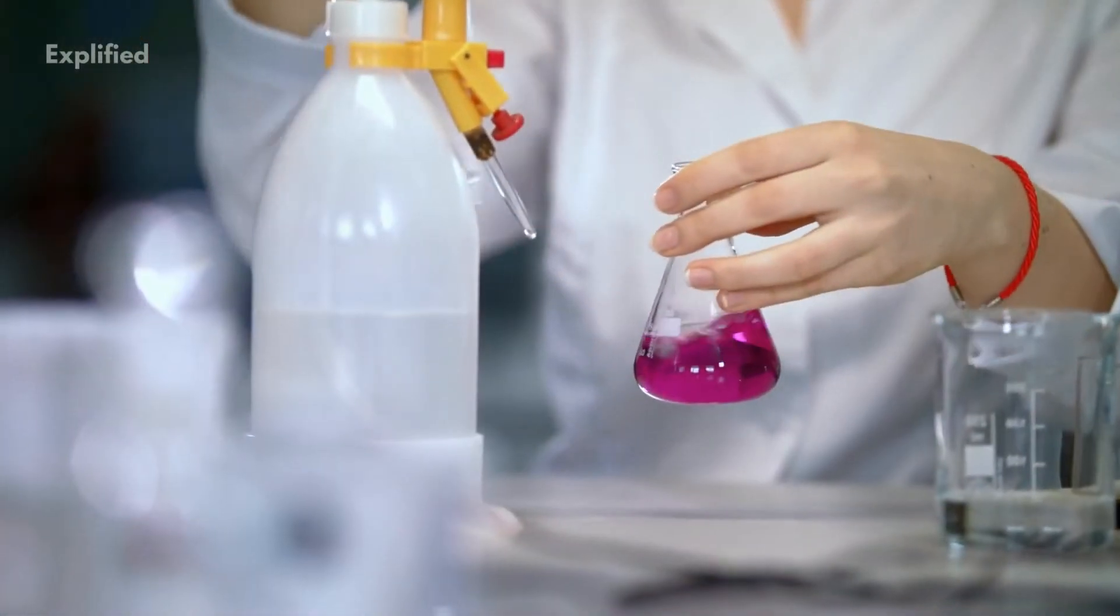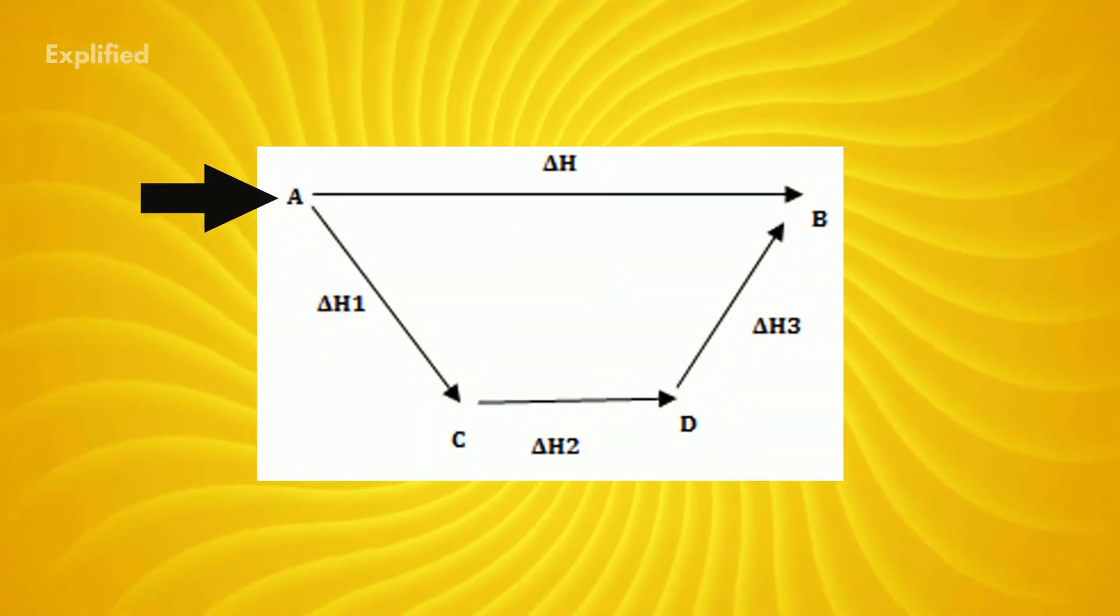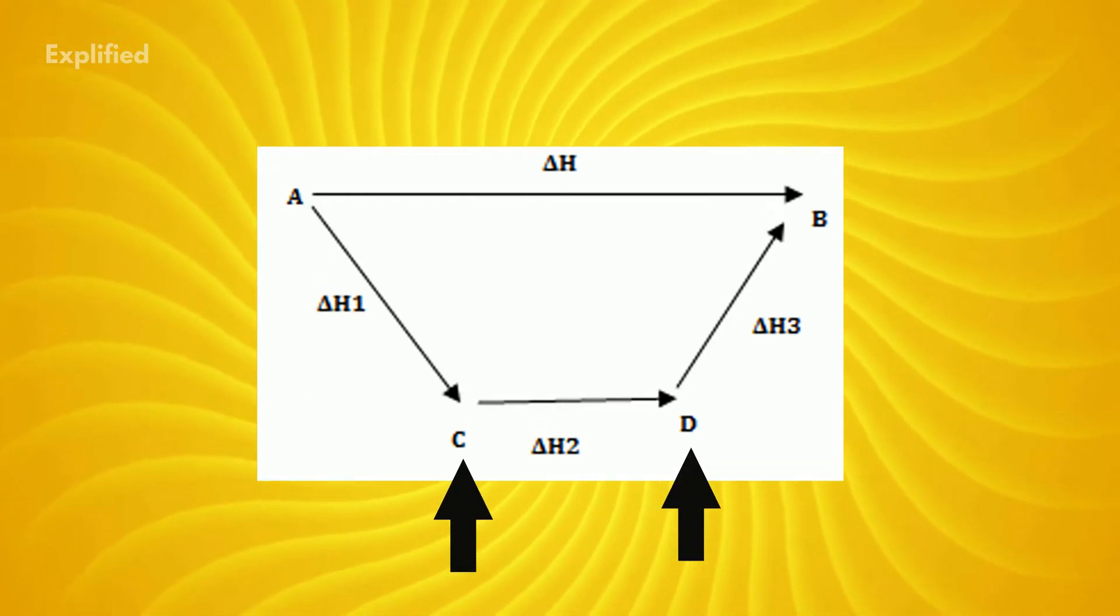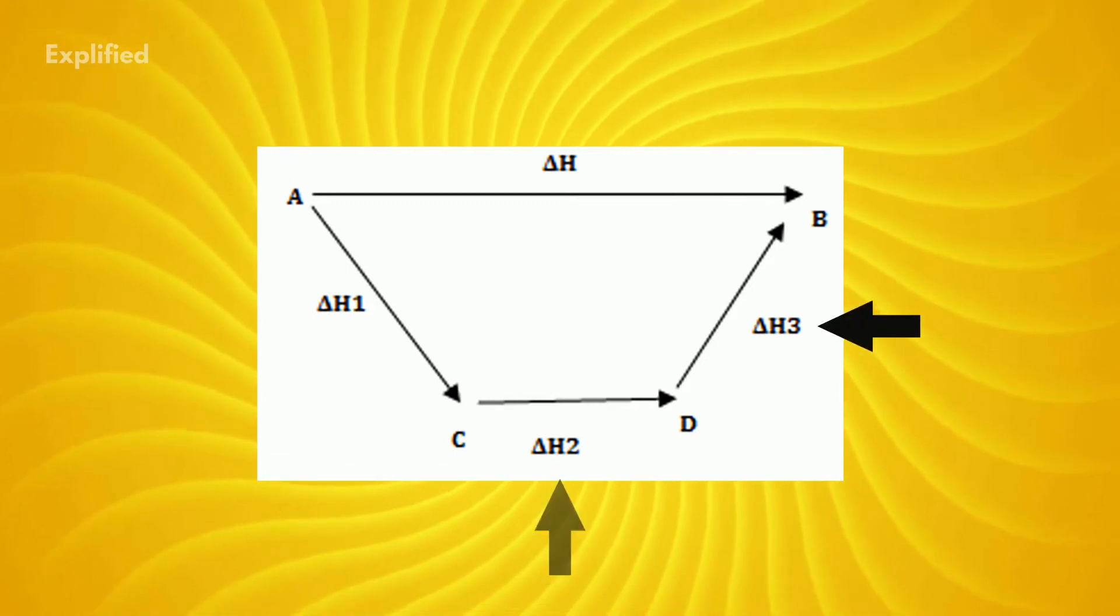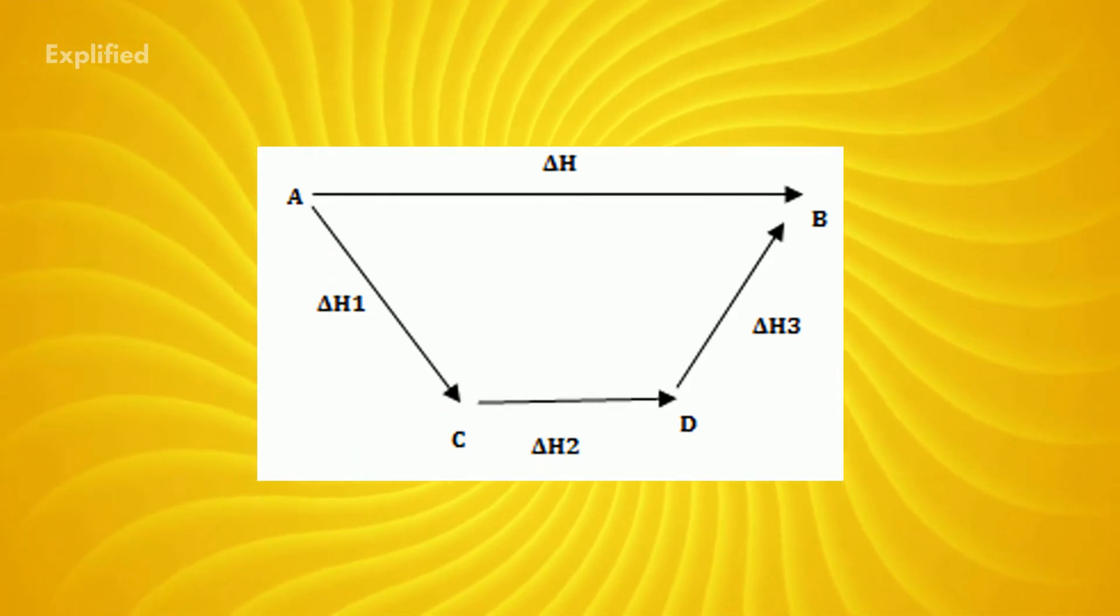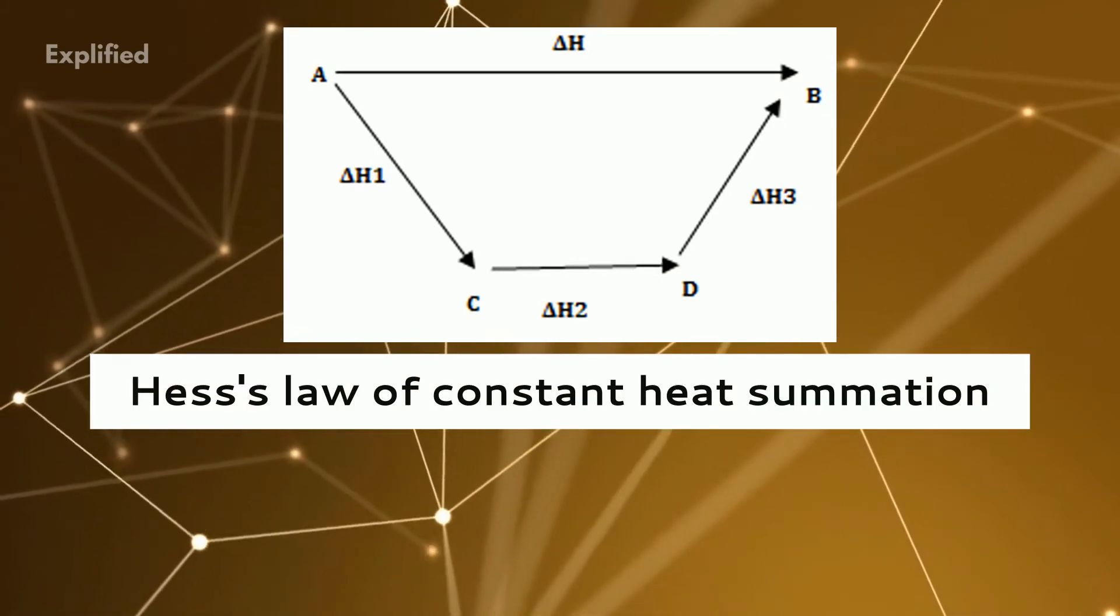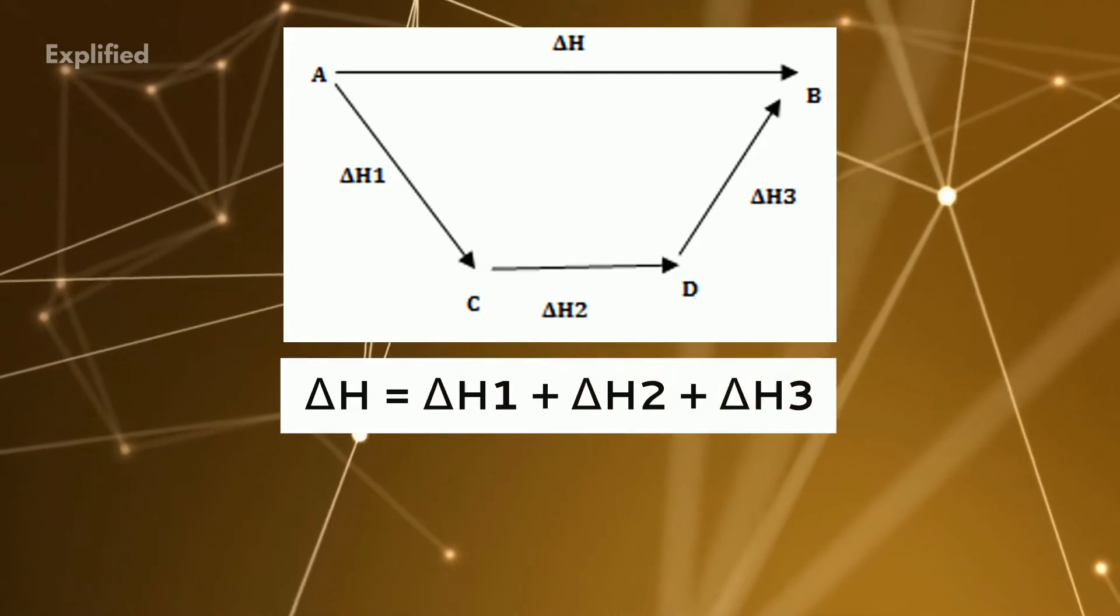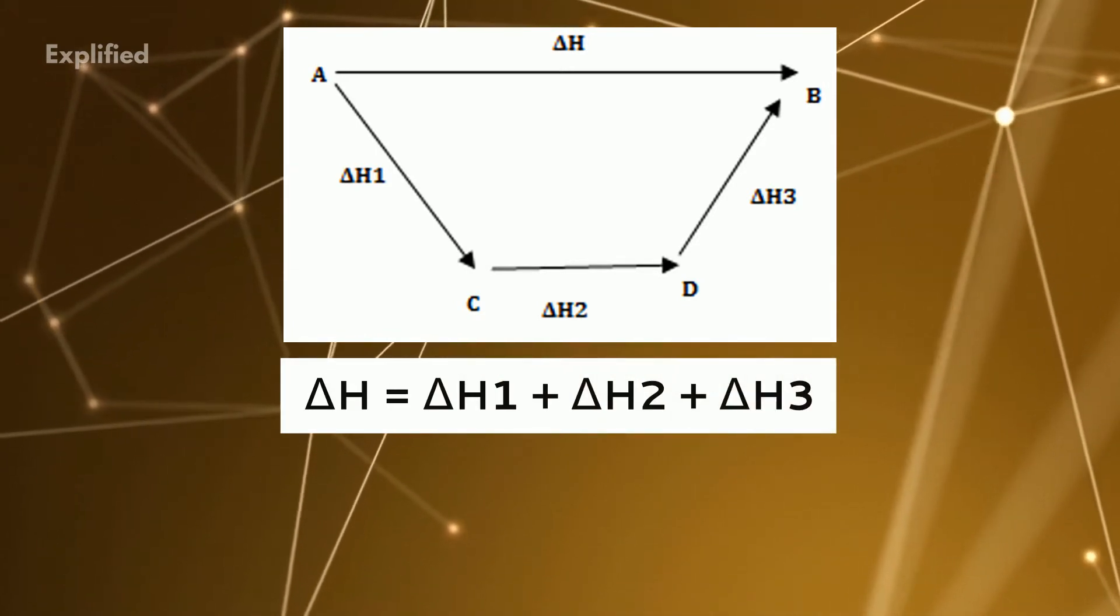Suppose the enthalpy change for direct conversion A to B is delta H. B can also be prepared from A through intermediates C and D for which enthalpy changes are delta H1, delta H2, and delta H3 respectively. Then, according to Hesse's law, delta H equals delta H1 plus delta H2 plus delta H3.